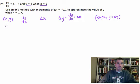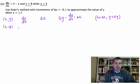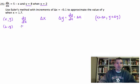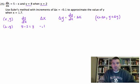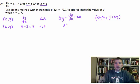I'm going to start with 2, 8. And when I put 2, 8 in, I've given a value for x and a value for y. So what does dy/dx equal? It equals 5 minus 2, and that's going to be 3. Delta x is negative 0.1. Delta y is going to be dy/dx times delta x, so that's going to be 3 times negative 0.1, which is negative 0.3.